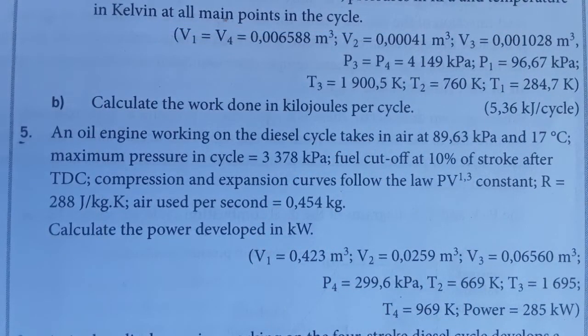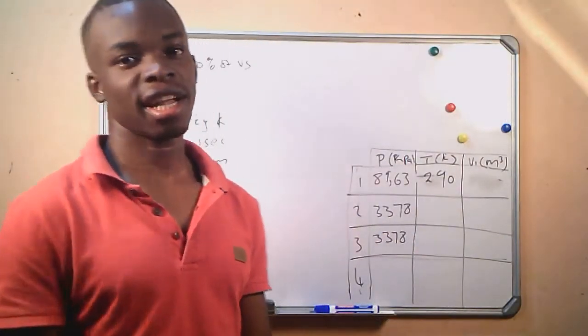An oil engine working on a diesel cycle takes in air at 89.63 kilopascal and 17 degrees Celsius. Maximum pressure in the cycle is equal to 3,378 kilopascal. Fuel cut off at 10% of stroke after top dead center. Compression and expansion curves follow the law PV raised to index 1.3 equals constant. The gas constant R is equal to 288 joules per kg Kelvin. Air used per second is equal to 0.454 kg. The question asks us to calculate the power developed in kilowatts.